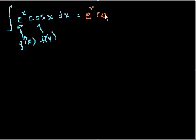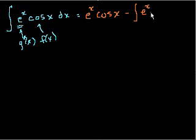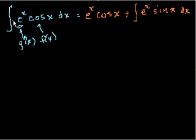So we take g of x times f of x, and then subtract the indefinite integral of g of x times f prime of x. The derivative of cosine of x is minus sine of x. The two minus signs cancel, giving us a plus. So the integral of e to the x·cos(x) dx equals e to the x·cos(x) plus the integral of e to the x·sin(x) dx.